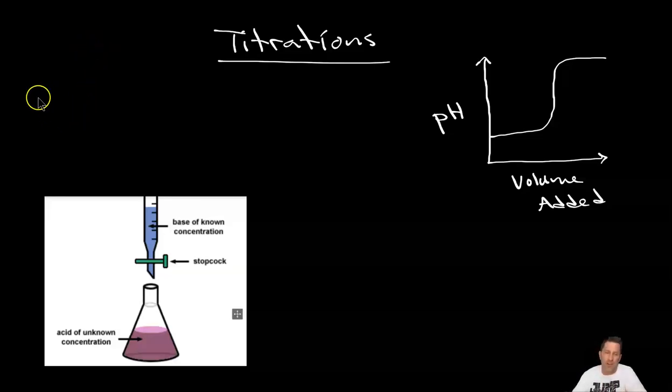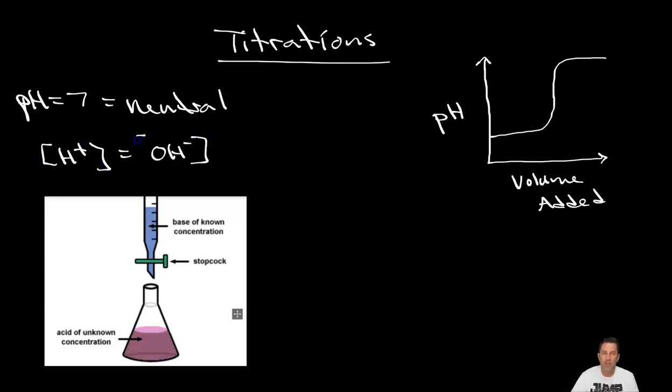It takes advantage of the fact that when the pH is equal to 7 the solution is neutral, which means that at a pH of 7 the H plus is equal to the OH minus. Now, what we're doing in a titration is one of these I don't know. One of them I do know. So if I can figure one out and I know they're the same value because they are equal, then I know the concentration of the other.